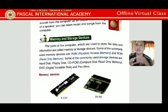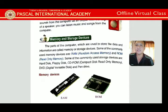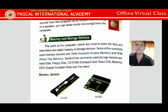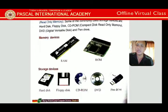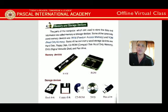We need memory because whenever we do some work on the computer, we may need it in the future, so we save it. Internal memories are RAM (Random Access Memory) and ROM (Read Only Memory). External storage includes hard disk (also called SSD), floppy disk, CD-ROM (Compact Disc Read Only Memory), DVD (Digital Versatile Disk), and pen drive. RAM and ROM are primary memory; the others are secondary memory.